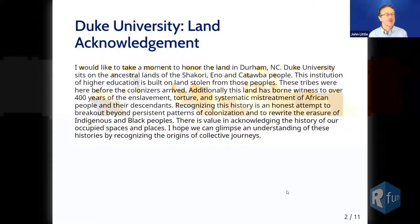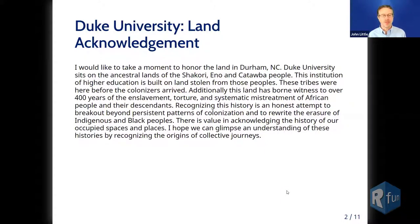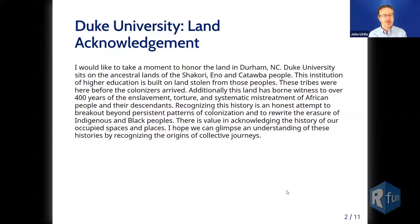I like to start by reading this land acknowledgement. Duke University sits on the ancestral land of the Shikori, the Eno, and the Catawba people. This institution of higher education is built on land stolen from those peoples. These tribes were here before the colonizers arrived. Additionally, this land has borne witness to over 400 years of the enslavement, torture, and systematic mistreatment of African people and their descendants. Recognizing this history is an honest attempt to break out beyond persistent patterns of colonization and to rewrite the erasure of indigenous and Black peoples. There is value in acknowledging the history of our occupied spaces and places. I hope we can glimpse an understanding of these histories by recognizing the origins of our collective journeys.